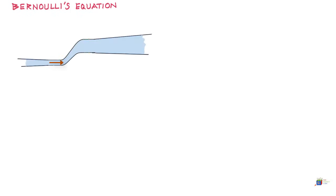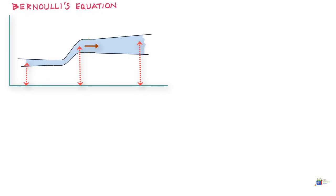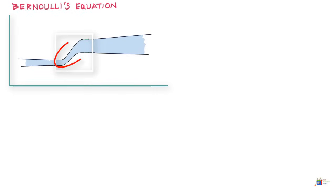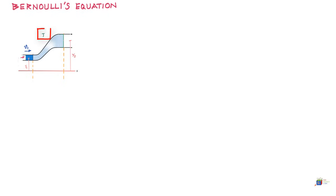Consider a pipe that has a liquid flowing in it, and this pipe has varying elevation and cross-sectional areas through the length of the pipe. Now, I want you to focus on a section of this pipe and the volume of liquid contained in it. Let us say this is that section, and this is the situation of liquid at time t, so that the velocity of liquid here is v1, and the elevation is y1.